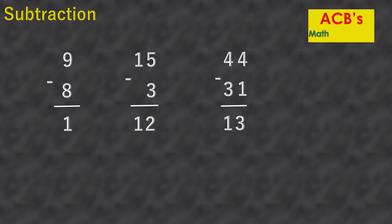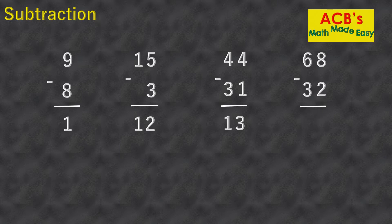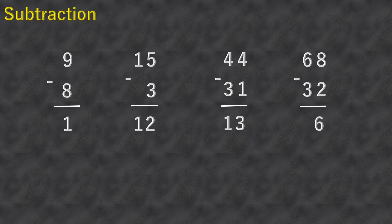Sixty-eight minus thirty-two. Eight minus two equals six, and six minus three equals three. So sixty-eight minus thirty-two equals thirty-six.